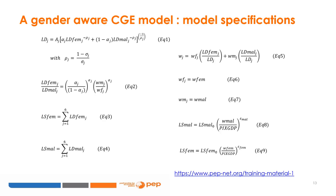Male and female labor supply is a function of real wages. If the elasticity of labor supply epsilon equals 0, labor supply is fixed and wages adjust to equalize supply and demand. If it is infinite, wages are fixed and labor supply is entirely driven by labor demand. When epsilon is between 0 and infinite, both labor supply and wages are flexible. The sectoral wage W(J) in equation 5 is a weighted average of male and female wages. Practical examples on how to implement this in GAMS software are provided on the PEP website at the MPIA training materials section.